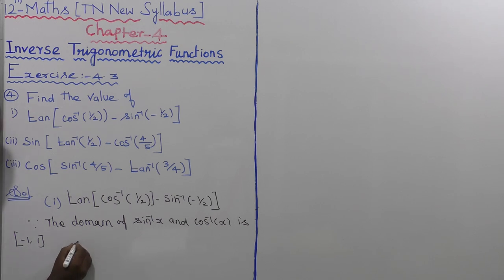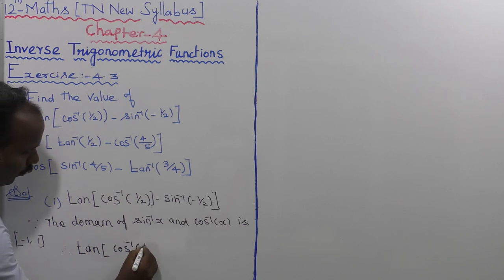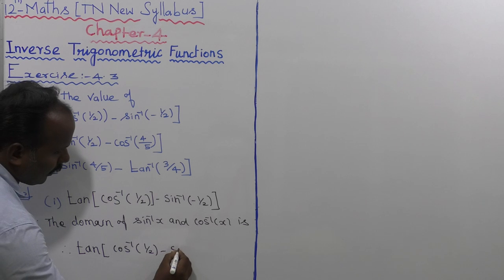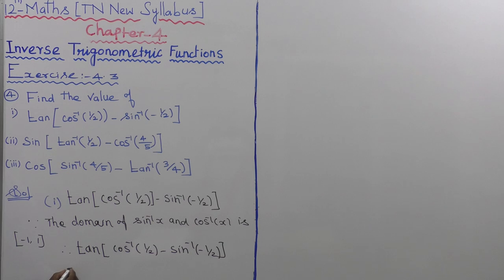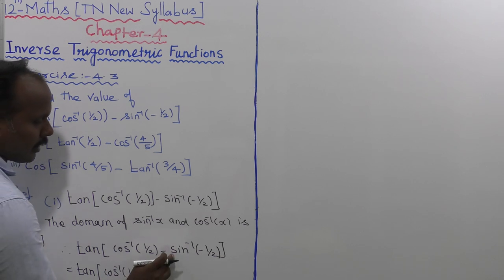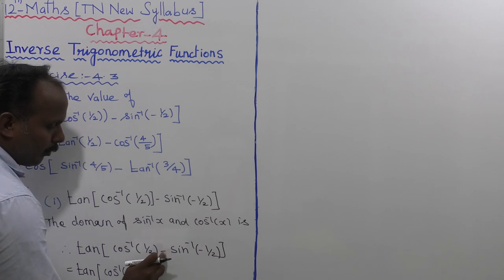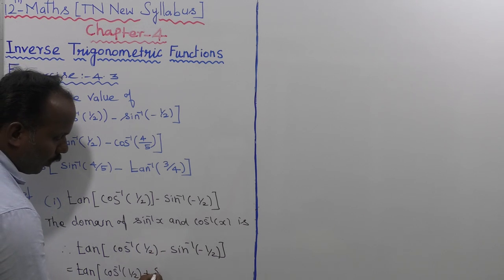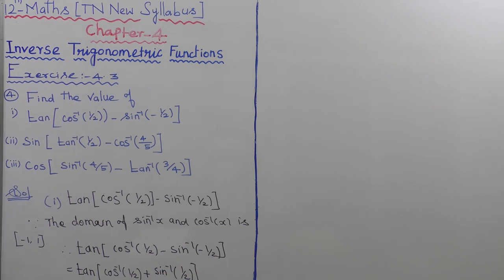Therefore, tan of cos inverse of 1 by 2 minus sin inverse of minus 1 by 2 is equal to tan of cos inverse of 1 by 2. Since sin of minus theta equals minus sin theta, minus into minus gives plus, so we get plus sin inverse of 1 by 2.